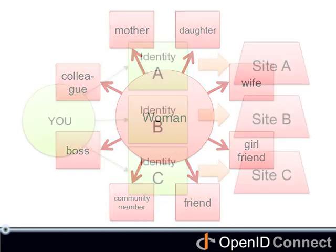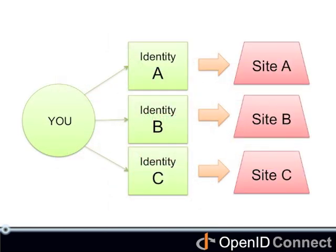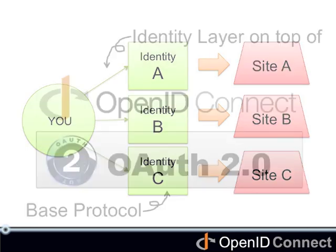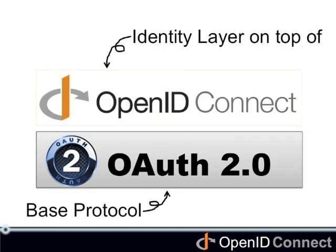The same holds for websites. You want to use different identities depending on the sites you go to, to get better service. That's the identity layer. And with OpenID Connect, we have chosen to build it over OAuth 2.0.